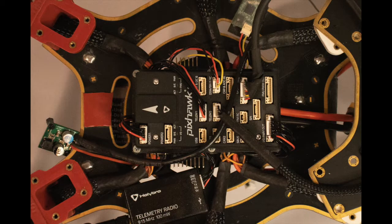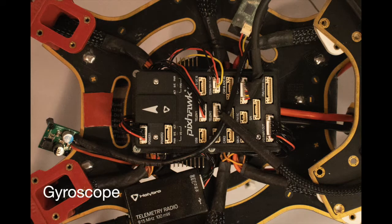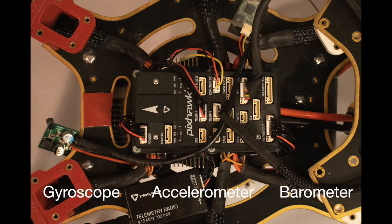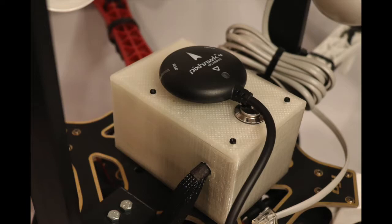The PixHawk 4 contains most of the sensors used for estimating the platform's state, including a gyroscope, accelerometer, and barometer. There is one outboard sensor, the PixHawk 4 GPS compass unit, which is located on top of the Raspberry Pi cover.